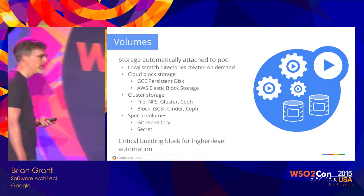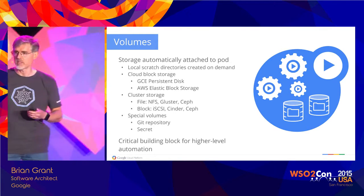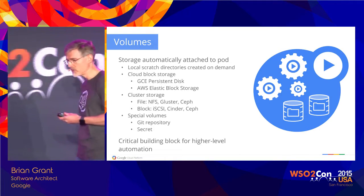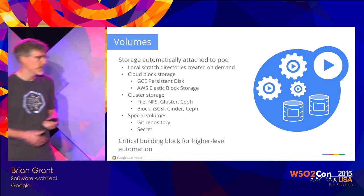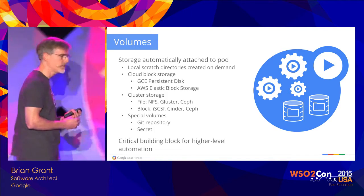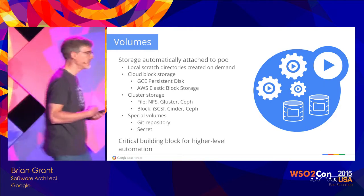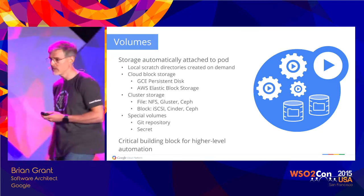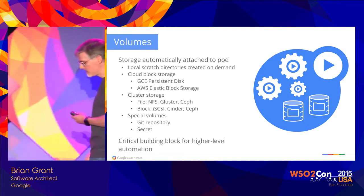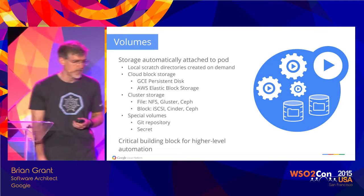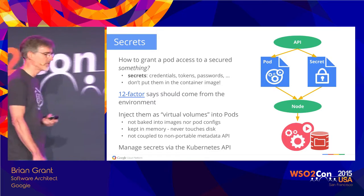Volumes are the other important piece in addition to containers. Most applications require some amount of storage, even just a place to put logs, so volumes are a key building block for higher level automation. Kubernetes does that for you — it can create scratch directories on demand, attach cloud block storage, cluster block storage, or file storage to your pod. There are also special volumes like automatically cloning a git repository into your pod, or secrets, which can be used to grant access to other things from your application.